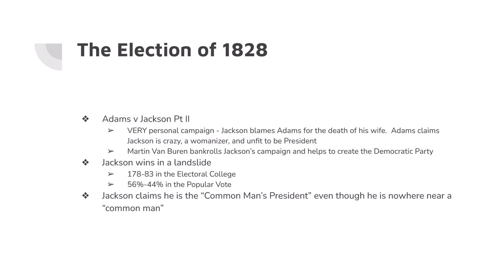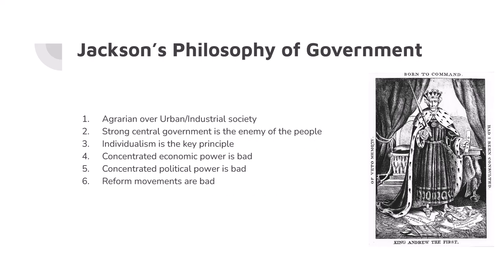Jackson wins because of a combination of people really disliking John Quincy Adams and people feeling bad for Andrew Jackson. His philosophy of government: he preferred agriculture and agrarian societies, smaller government, state government over federal government, and said strong government is bad. He believed in individualism and individual rights, and thought people having too much economic or political power was bad. He disliked reformers' calls for government intervention because he thought reforms would restrict individual freedoms. But he is depicted dressed up like a king, because his governing philosophy didn't actually match what he said he would do.